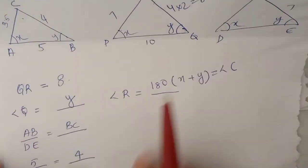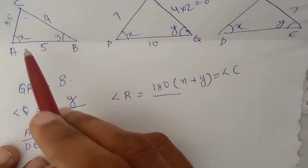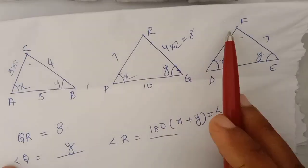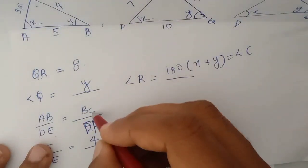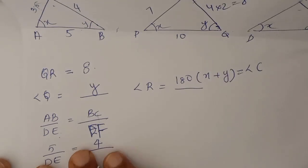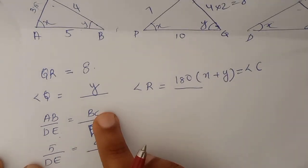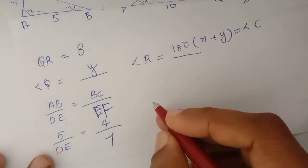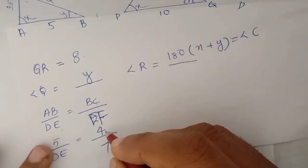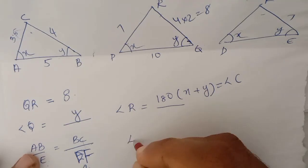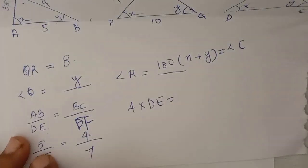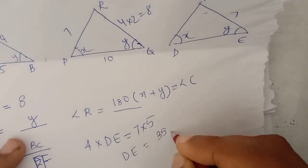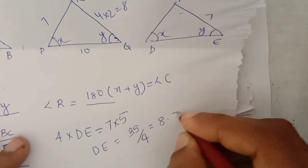The next question is: AB by DE is equal to BC by what? AB by DE equals BC by EF. We substitute: AB is equal to 5, DE is equal to BC by 4, EF is equal to 7. So 5 by DE is equal to 4 by 7. Then 4 into DE is equal to 7 into 5, giving DE equal to 35 by 4. Let's calculate — that is 8.75.